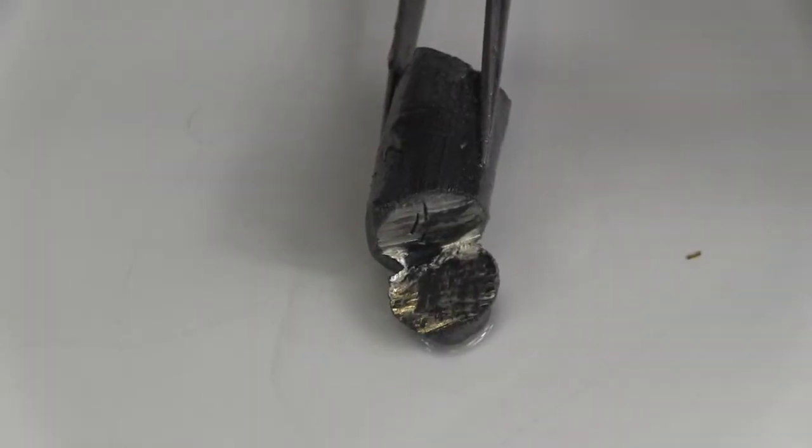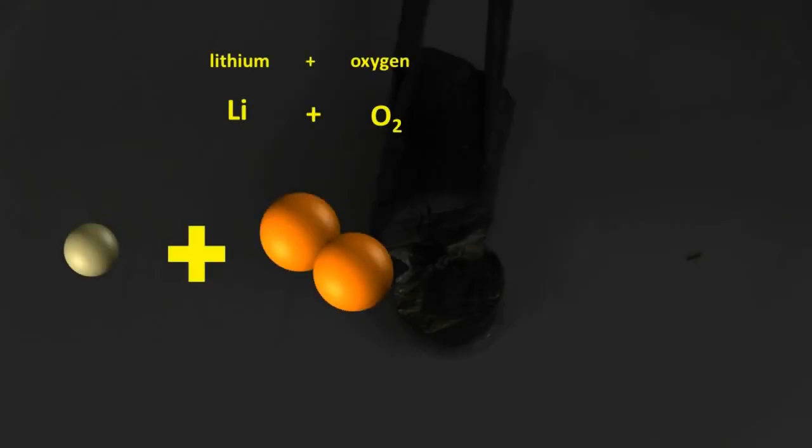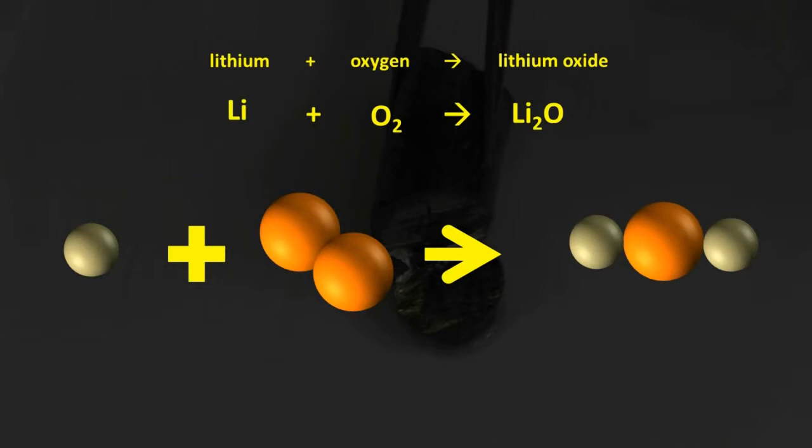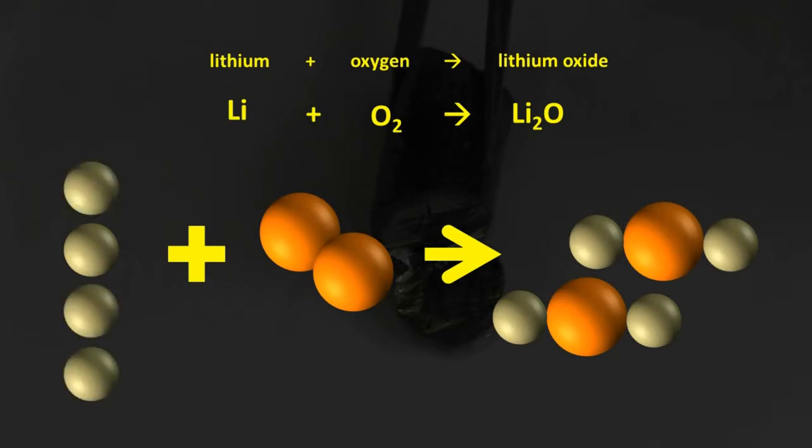The equation for lithium's reaction with oxygen is lithium plus oxygen produces lithium oxide. We can see that for every pair of oxygen atoms, two Li2O's are produced, which means that we need a total of four lithium atoms to react with every pair of oxygen atoms.